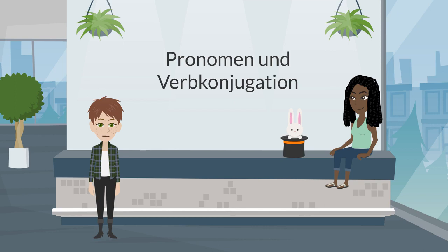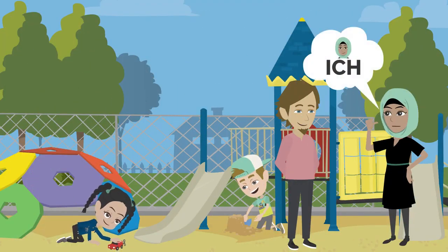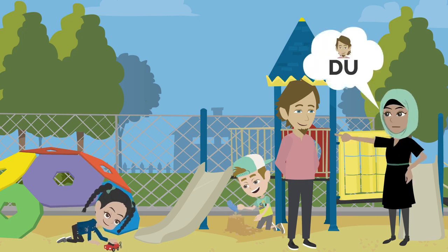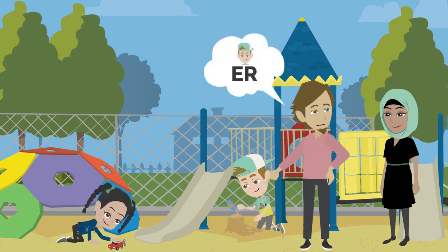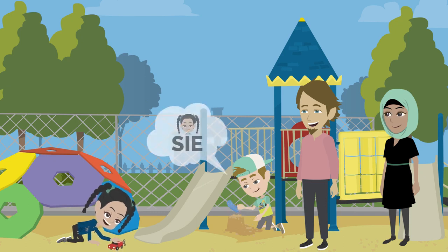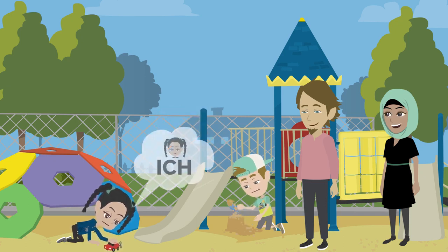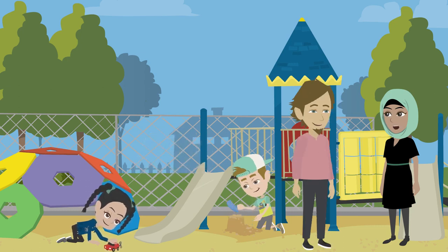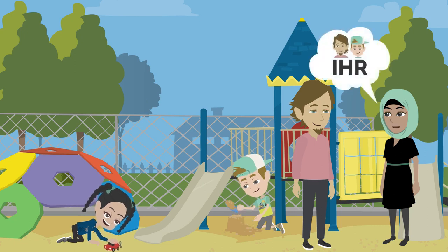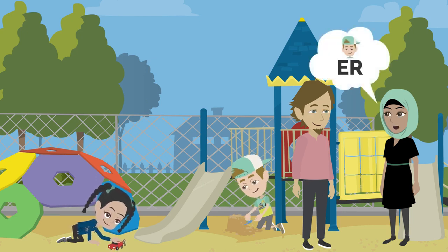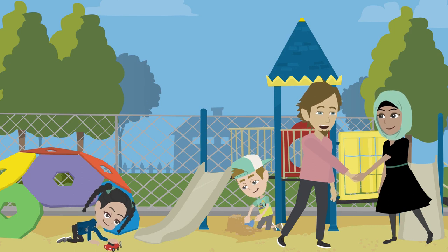Listen to the dialogue and pay attention to the pronouns. Ich heiße Ari. Wie heißt du? Ich heiße Leon. Er heißt Jonas. Ja, ich heiße Jonas. Sie heißt Lilly. Genau, ich heiße Lilly. Also, wir heißen Ari und Lilly. Ich heiße Ari. Sie heißt Lilly. Ihr heißt Leon und Jonas. Du heißt Leon. Und er heißt Jonas. Sie heißen Lilly und Jonas. Wunderbar! Freut mich! Mich auch!